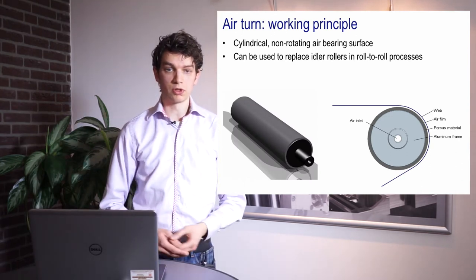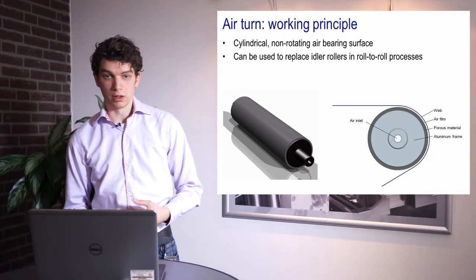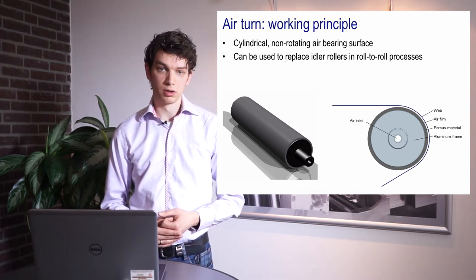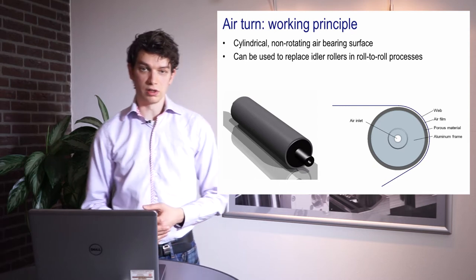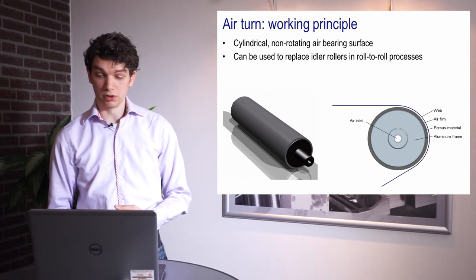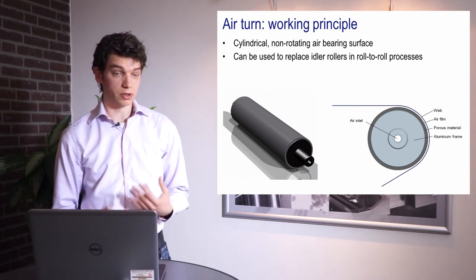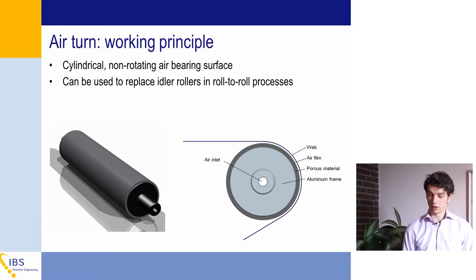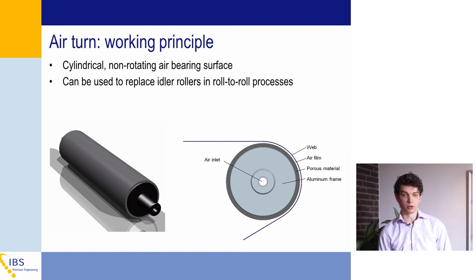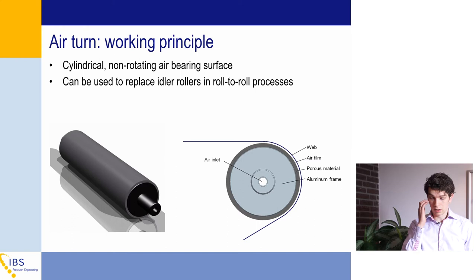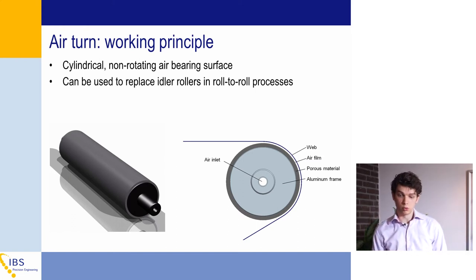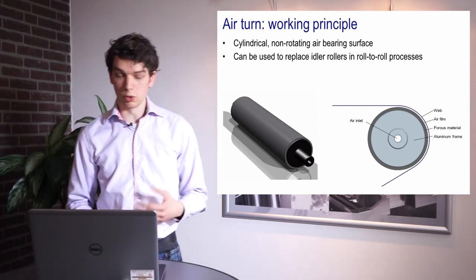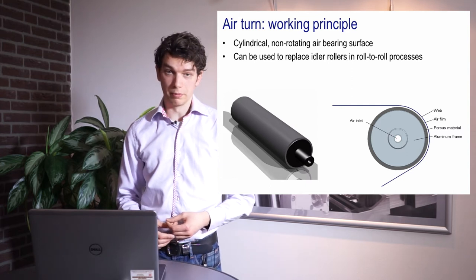To move towards flexible substrates in roll-to-roll processing, two types of air bearings were developed. The first is an air turn, which is basically a cylinder whose cylindrical surface is fully made of porous material. As shown in the figure on the right, a film is wrapped over the surface of the air turn just as you would with a normal roller. Due to the air film between the film and the cylindrical surface, the film can be moved without contact and without friction in any direction. Unlike a normal roller where the surface rotates, with the air turn the surface is stationary — so there are no bearings or other moving mechanical components.